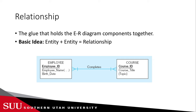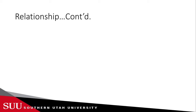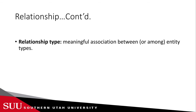This says employees complete courses. How do I know how many courses are completed by how many employees? Will each employee complete one course or multiple courses? Will each course be completed by only one employee or multiple employees? We will be able to determine this by the cardinalities shown here, which is something we will talk about after this.